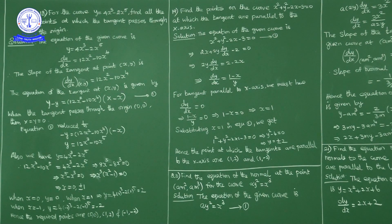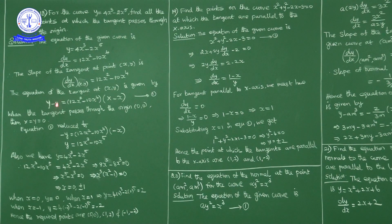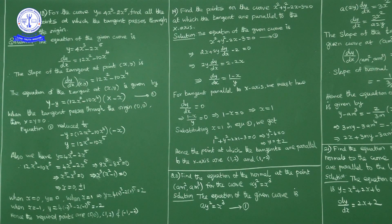In general we write y - y₁ = m(x - x₁). Here the arbitrary point is (x, y). So we write: Y - y = (12x² - 10x⁴)(X - x). This is the equation of the tangent. Now, we have to find points at which the tangent passes through the origin, meaning this tangent passes through (0, 0).